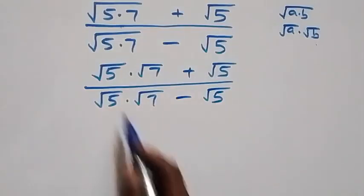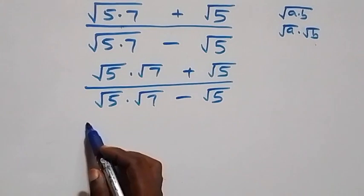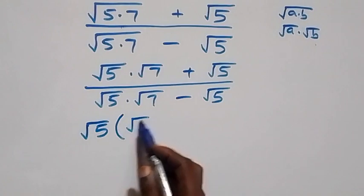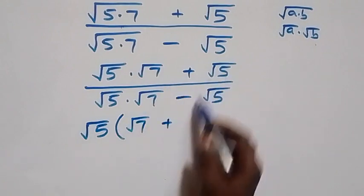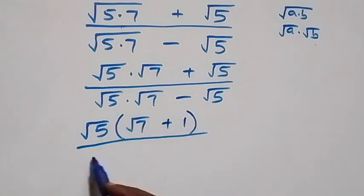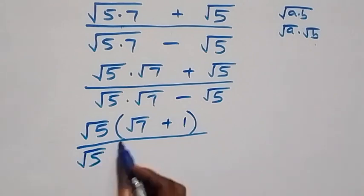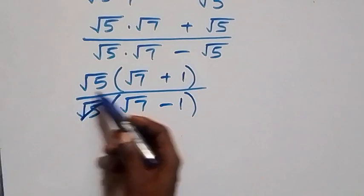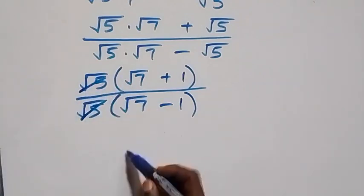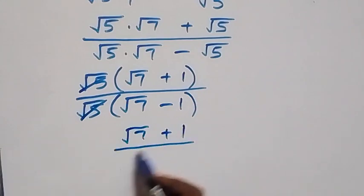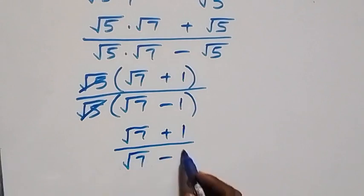At the next step, √5 is common in the numerator, so we factor it out and we have √5 × (√7 + 1). Then divided by the denominator, where √5 is also common, so we have √5 × (√7 - 1). Then the √5 terms cancel each other, so we have (√7 + 1) divided by (√7 - 1).